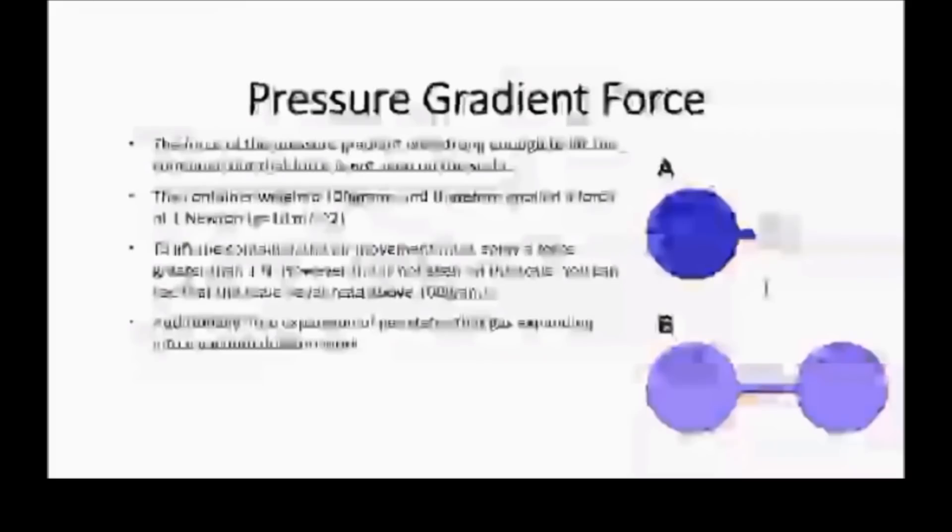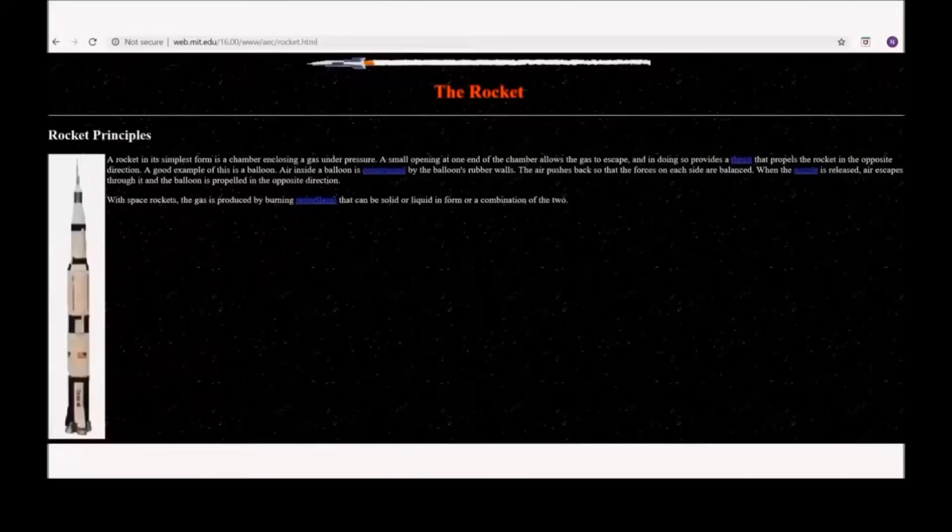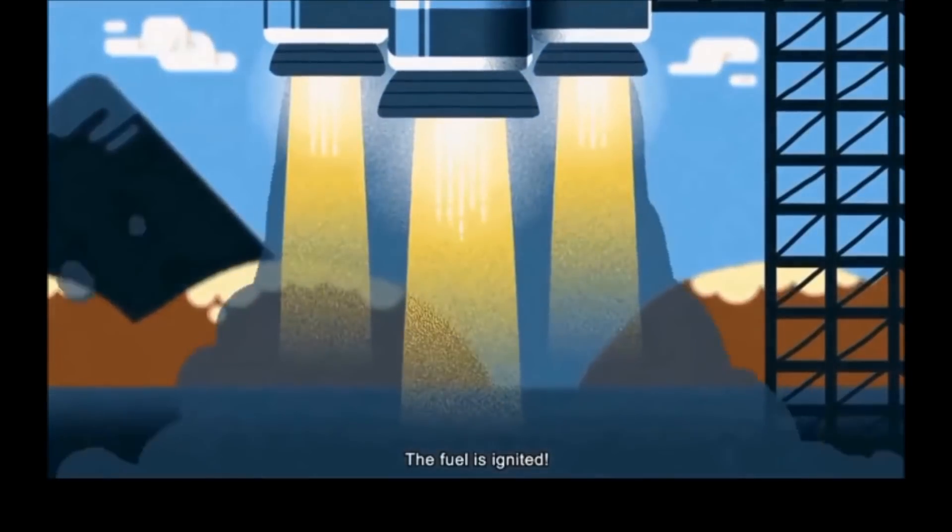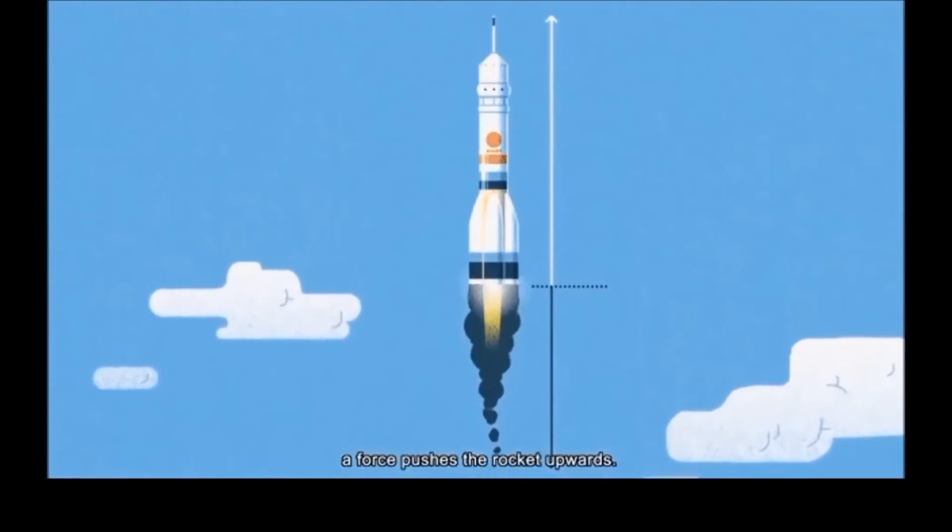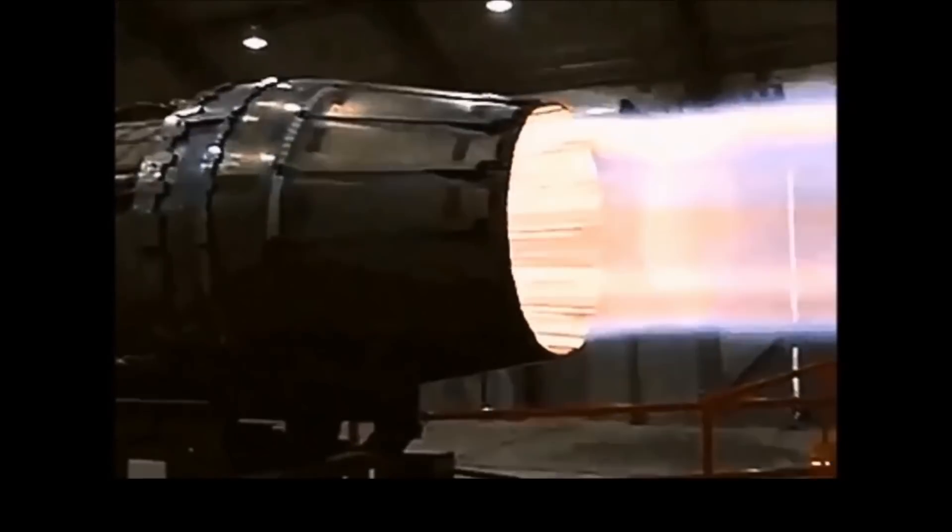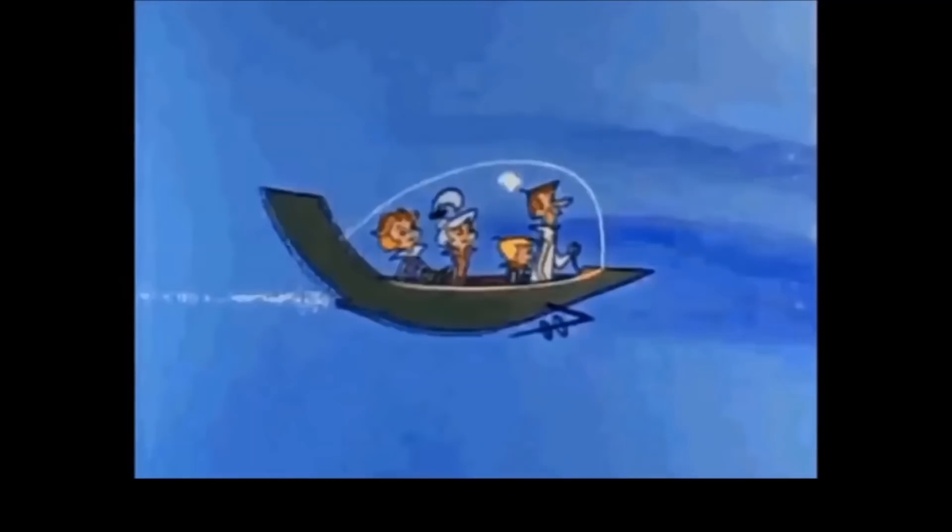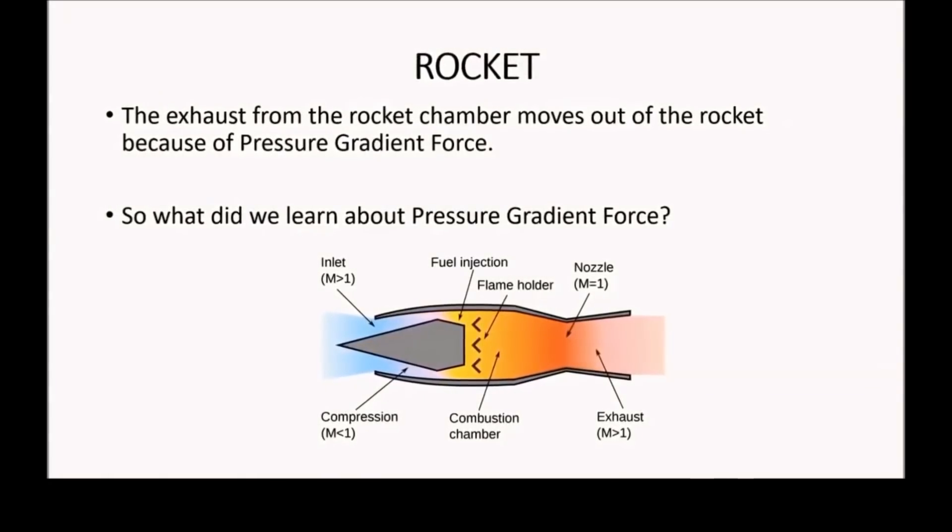Additionally, free expansion of gas states that gas expanding into a vacuum does no work. How does exhaust from the rocket chamber move outside the rocket chamber? Does the rocket push the gas out like a person throwing a ball? Does gas move out due to gravity, even though it's not a force? Does the gas move out due to buoyancy? Does the gas move out due to pressure gradient force? According to MIT, a rocket in its simplest form is a chamber enclosing the gas under pressure. A small opening in one end of the chamber allows the escape of pressurized gas. Escaping to low pressure sounds like pressure gradient force. The exhaust from the rocket chamber moves out of the rocket because of the pressure gradient force. That's a jet engine, not a rocket engine. You know that, right? So what did we learn about pressure gradient force? You're still showing a jet engine. See the inlet? Rockets don't have inlets.